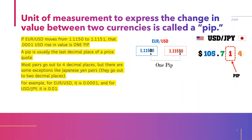You need a measurement to express the change in value between two currencies — that is called a pip. As you can see here, we have the EUR/USD and the USD/JPY, which are two pairs. If the EUR/USD moves from 1.1150 to 1.1151, that is a 0.0001 USD rise in value — that is one pip.